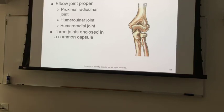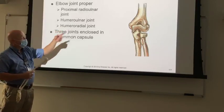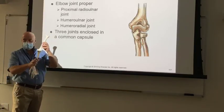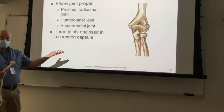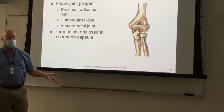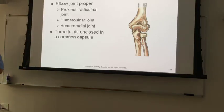The elbow joint itself is made up of the proximal radial-ulnar joint — the joint between the radius and ulna — as well as the humero-ulnar joint and the humero-radial joint. So you've got three bones going together to enable both flexion and extension plus rotation for supination and pronation. Supination is with the anterior surface up; pronation is with the anterior surface down. Three joints enclosed in a single capsule.